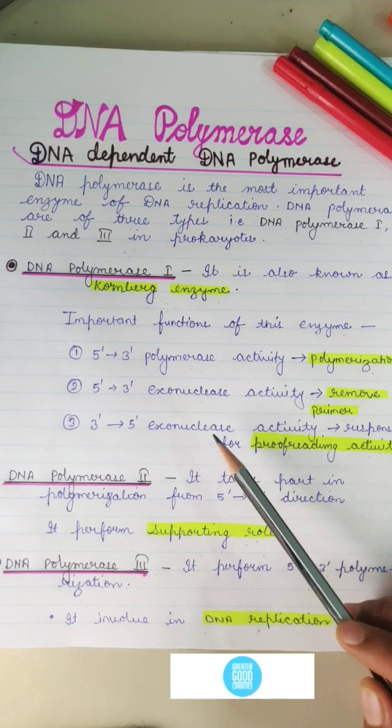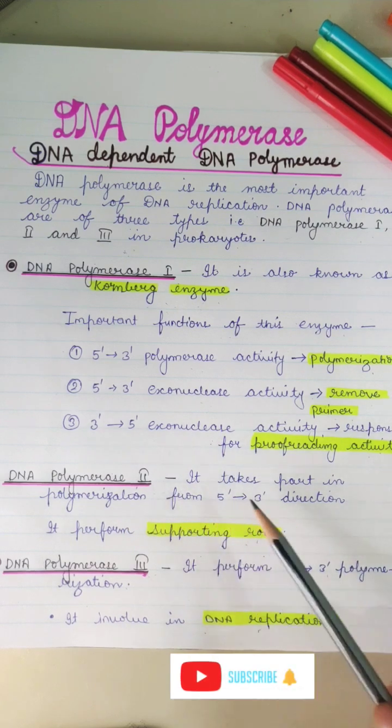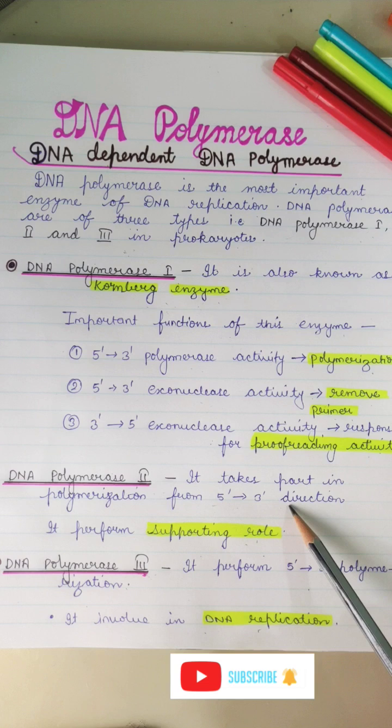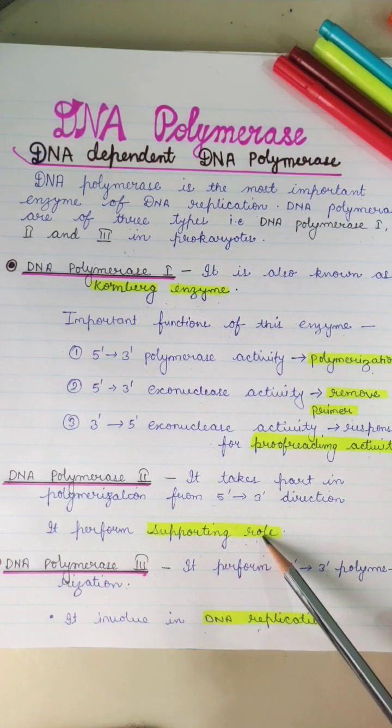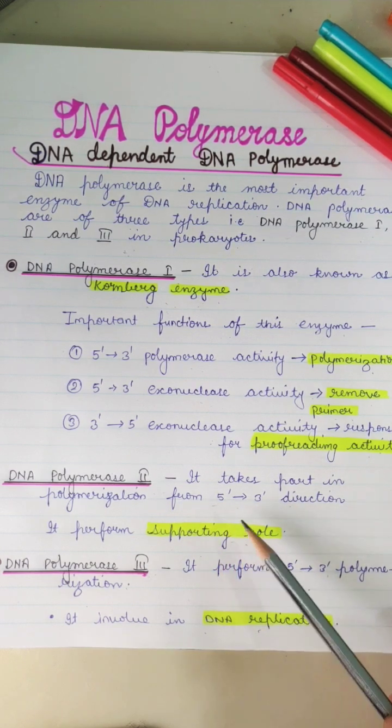Next is DNA polymerase 2. It takes part in polymerization from 5' to 3' direction and performs a supporting role. Supporting role means that if there is an error or gap, it is handled by DNA polymerase 2.